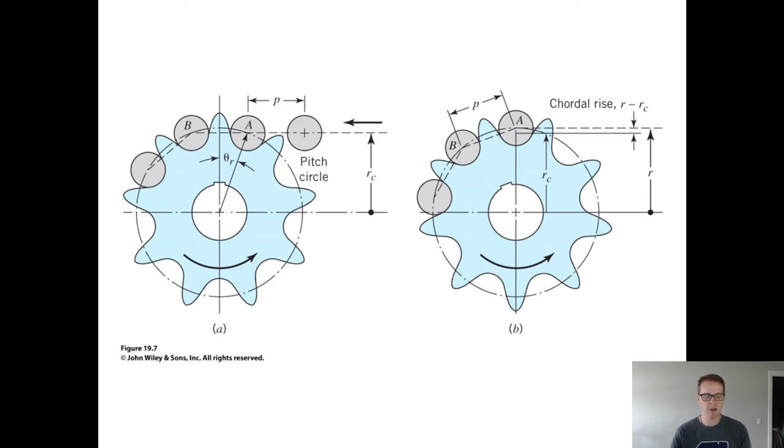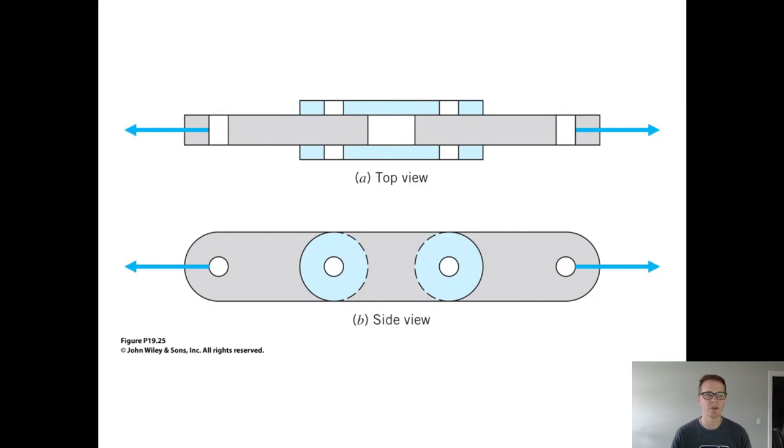The wear that they do experience can cause changes in the tension of the chain. Therefore, tensioning systems are sometimes needed because as they wear, that tension decreases. And there are, of course, ASME standards for sizing of chains and the associated sprockets and such that go with them to allow for dimensional compatibility across various manufacturers.